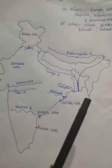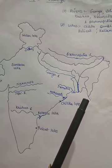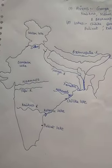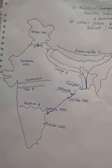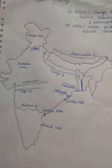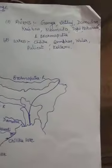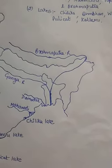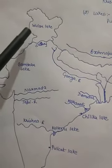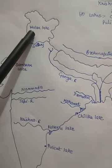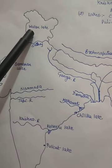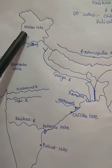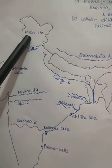Now let us start the lakes. The first lake is Wular lake. It is the largest freshwater lake in India and is the result of tectonic activity.